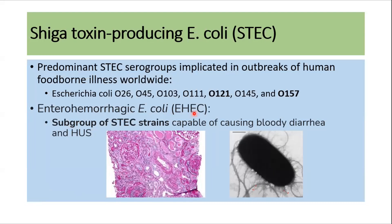There are a few serogroups of Shiga toxin-producing E. coli that are capable of causing foodborne outbreaks worldwide. They include O26, O45, O103, O111, O121, O15, and O157.